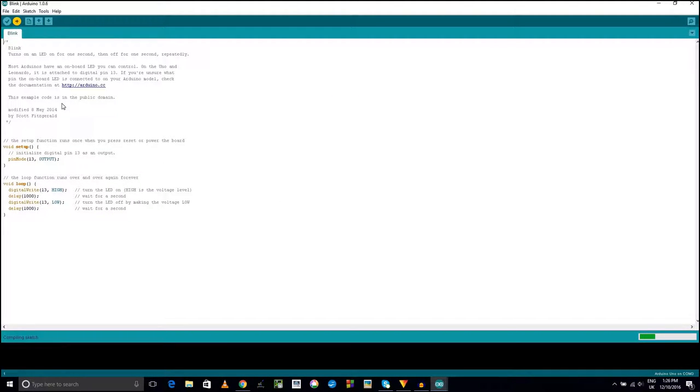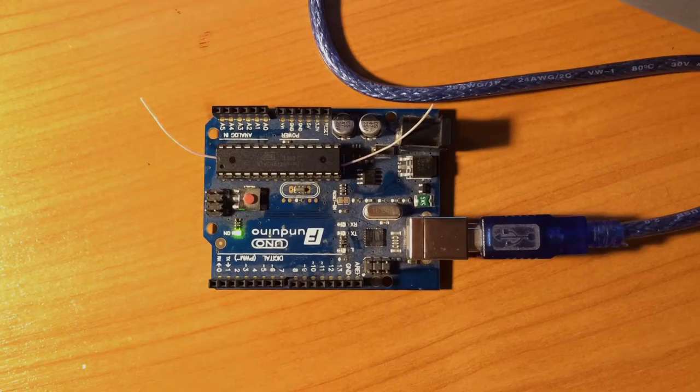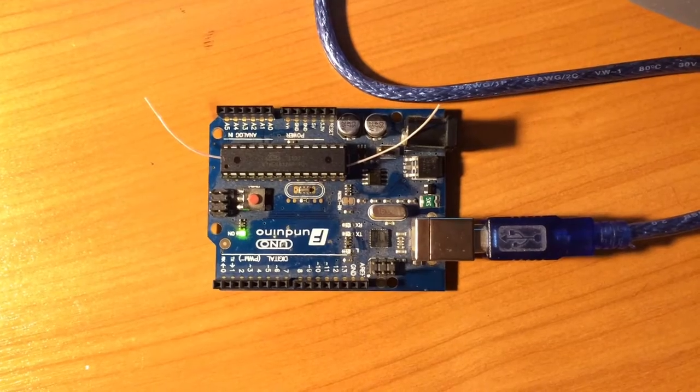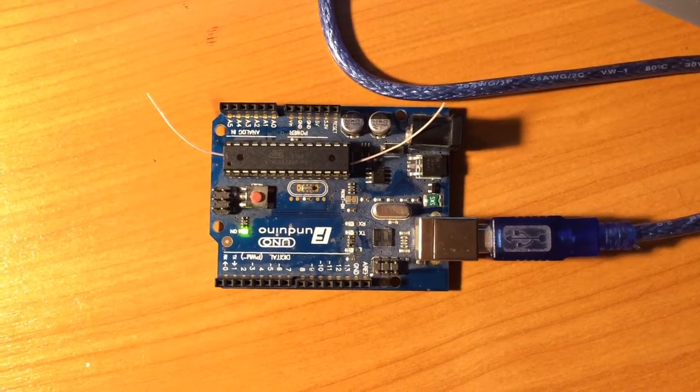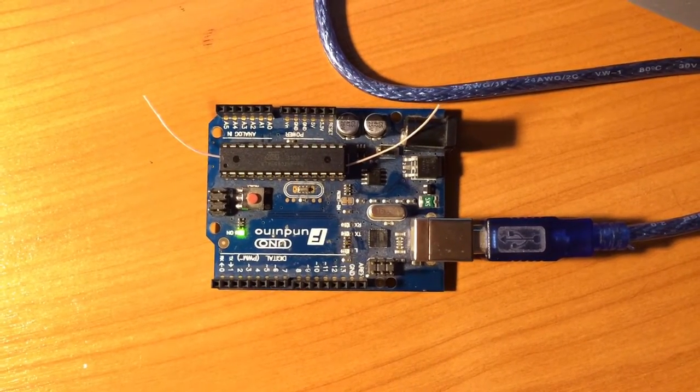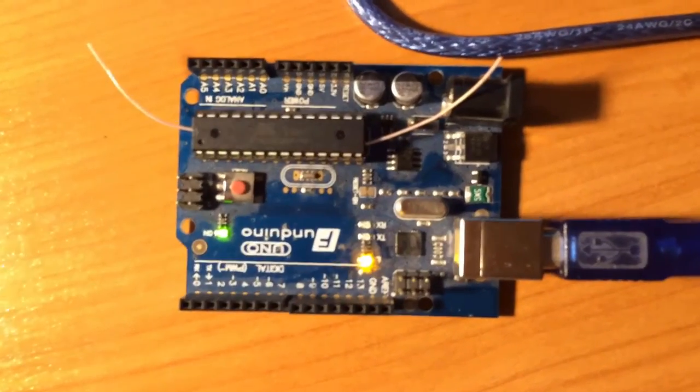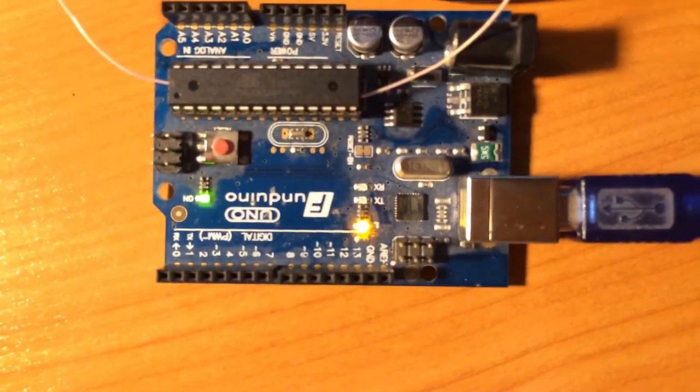All that this program does is toggles the voltage on pin 13. In my case I am able to see the result immediately after uploading the program because I have a pre-installed LED light right on the Arduino board.